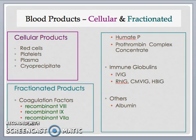The cellular blood products are red cells, platelets, plasma, and cryoprecipitate. These are often derived from individual whole blood collections, but platelets and plasma may also be derived from single donor apheresis collections. The fractionated blood products are derived from plasma collections from thousands of donors that undergo additional processing steps. There are three categories of fractionated products: the coagulation factors, the immune globulins, and others. The coagulation factors highlighted in green on this slide are the recombinant factors, while FEIBA, PCC, and HUMATE are plasma-derived.